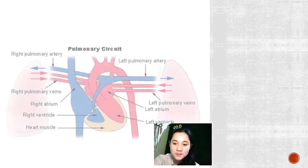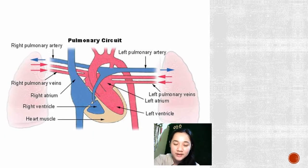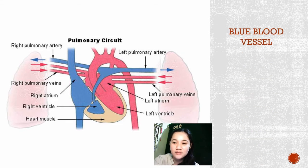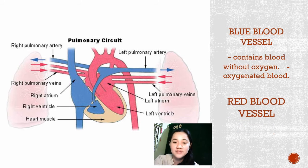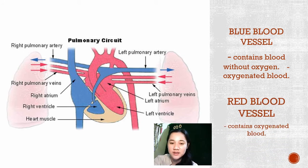As you notice in this picture, the right side of the heart is blue, while the left side of the heart is red. It means that the blue blood vessel contains blood without oxygen — it is called deoxygenated blood — while the red blood vessel contains oxygenated blood, or blood with oxygen.